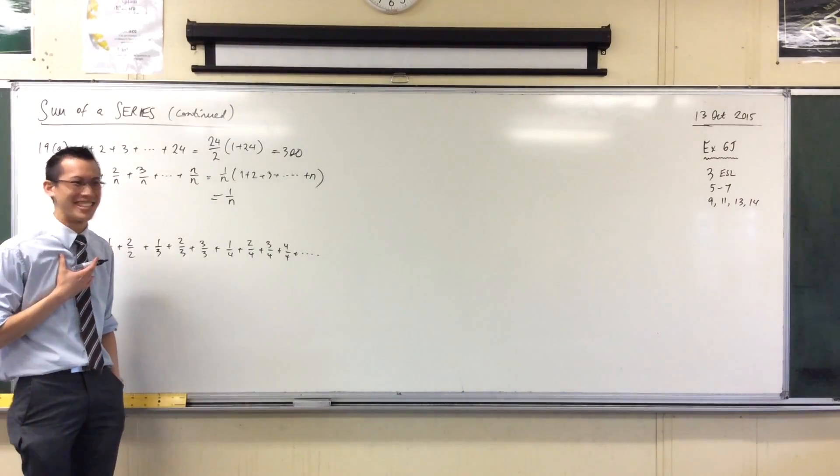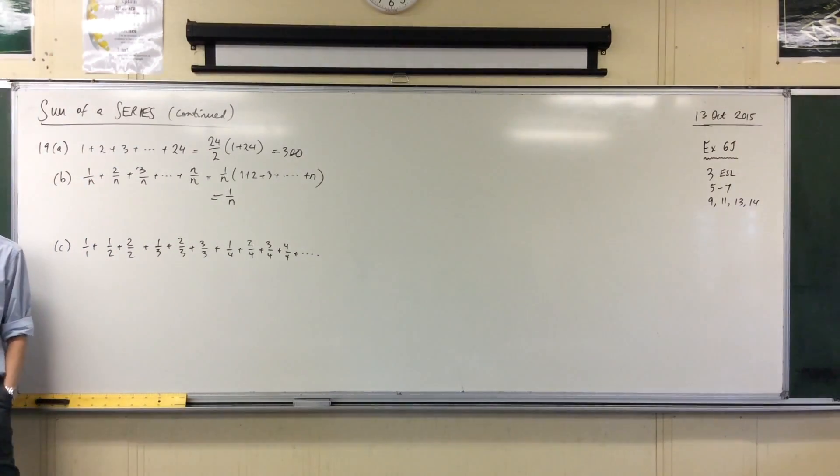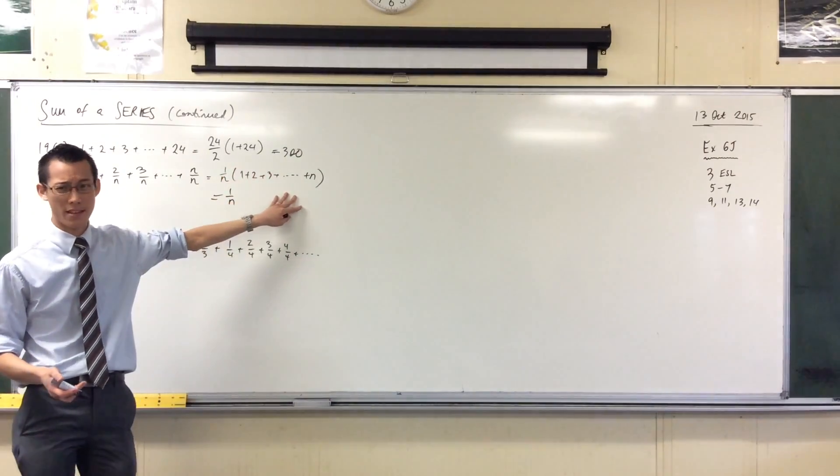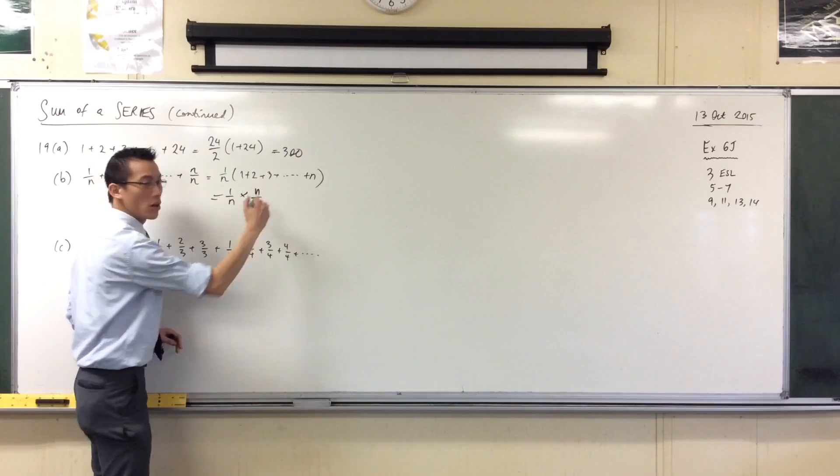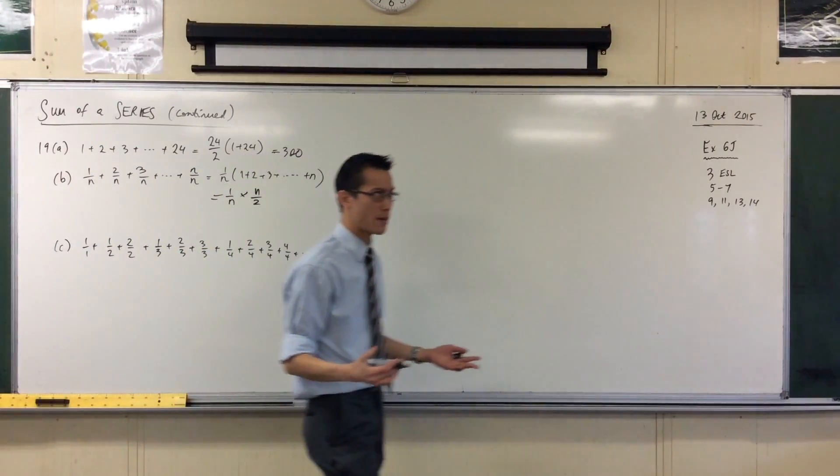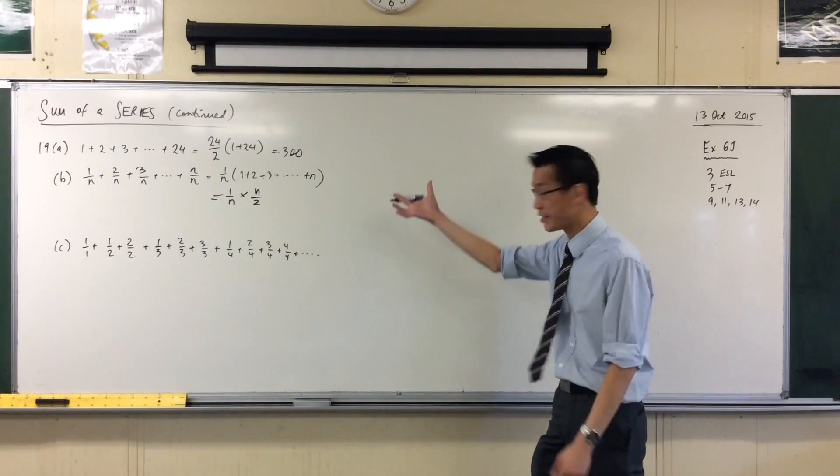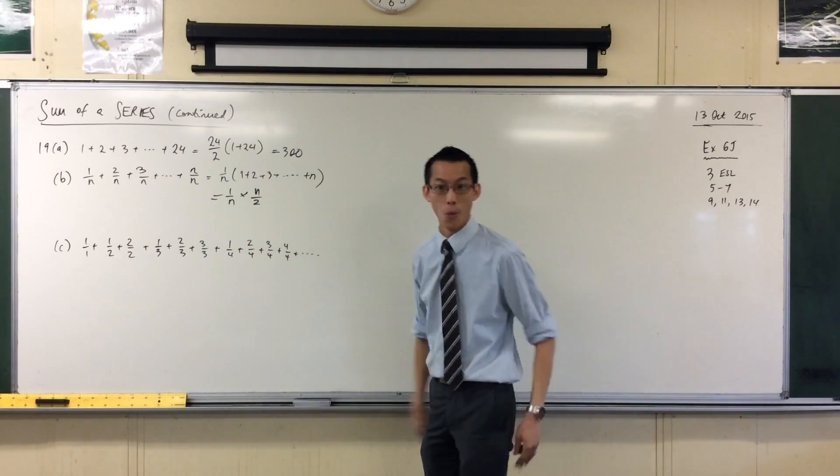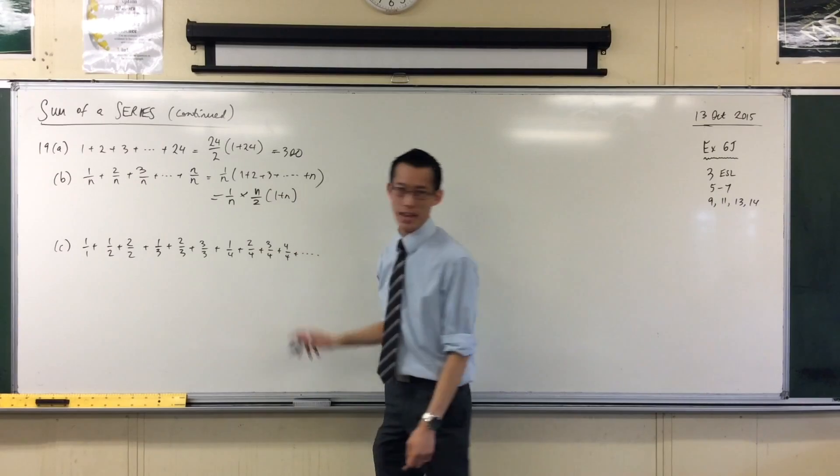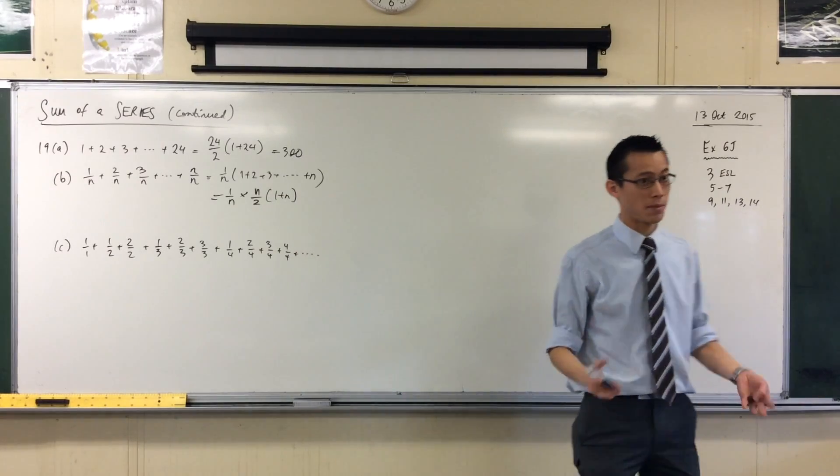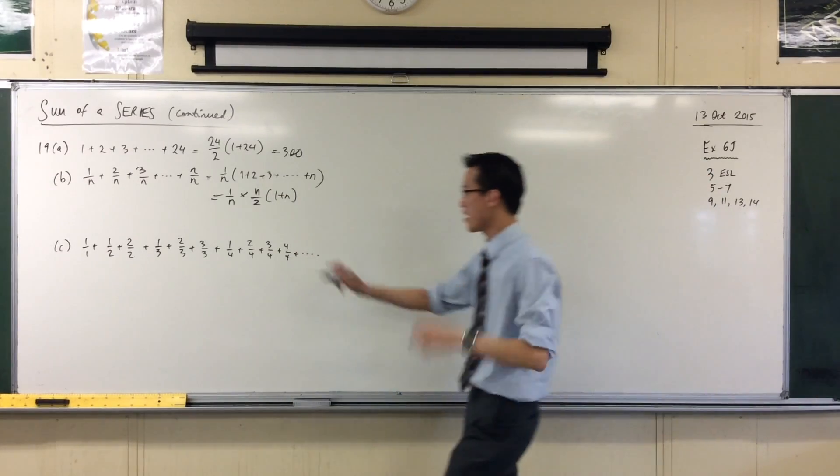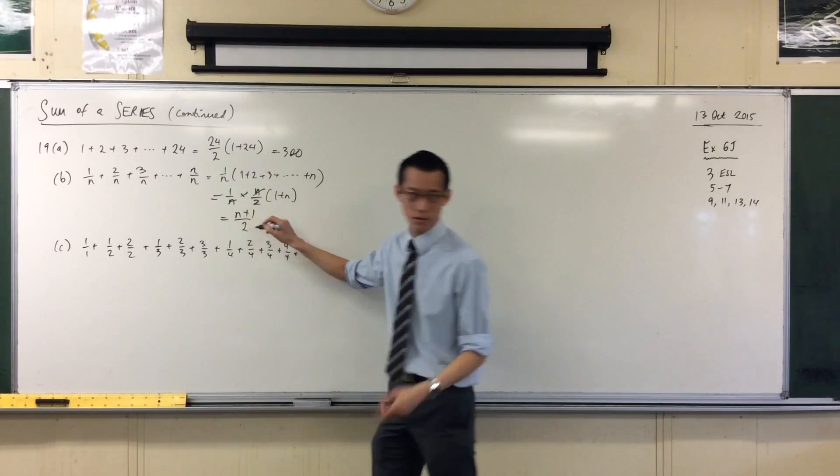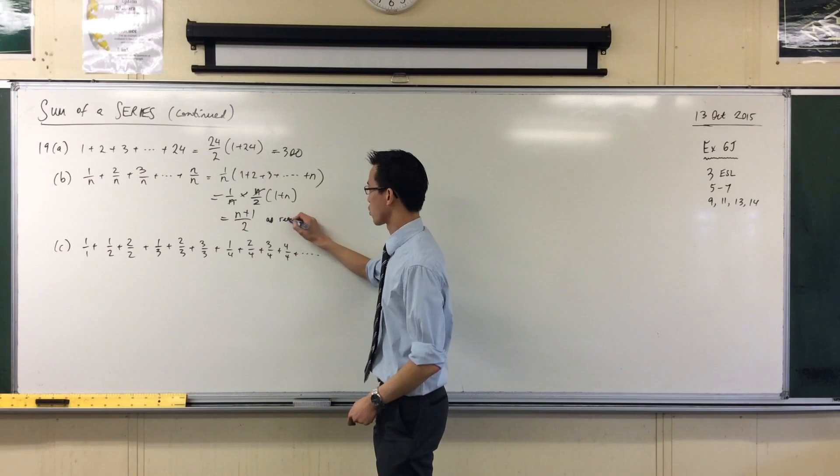How many terms are in this AP? M terms, right? So therefore, I will have M on 2, right? When I do my N on 2 A plus L, the M is literally M. What are my first and last terms? 1 and M, right? So I have 1 plus M. So, pretty simple. There's some cancelling out that happens there. Cancel, cancel. So I get M plus 1 on 2, and if you have a look at question 19, that is as required.